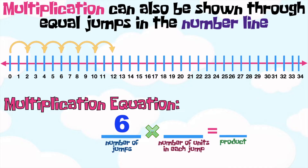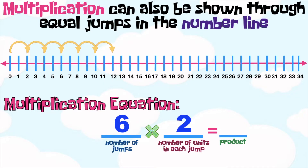How about the number of units in each jump? Let's take a look at the numbers on the number line. Since the first jump landed at two, the second at four, the third at six, the fourth at eight, the fifth at ten, and the sixth at twelve — as you can see, those numbers are skip counting by twos. So, the number of units in each jump is two. Therefore, six times two is equal to twelve, since the last jump lands at twelve.